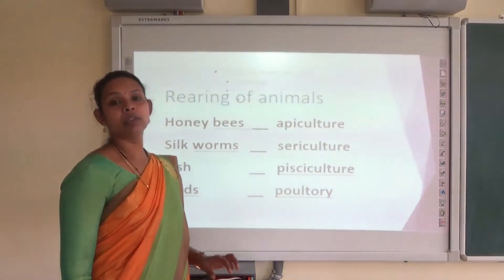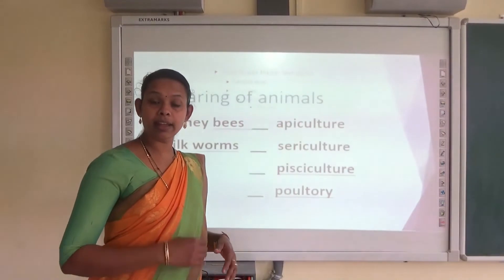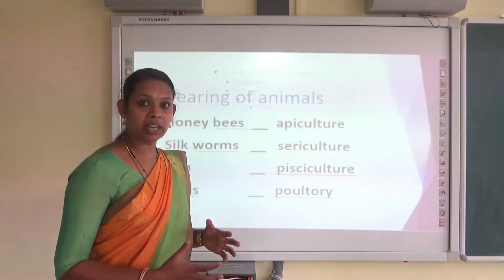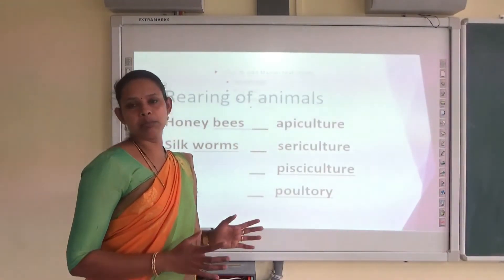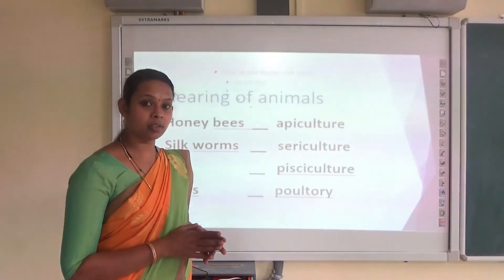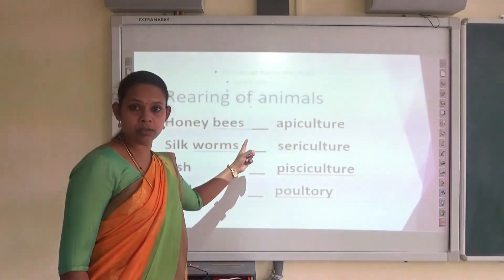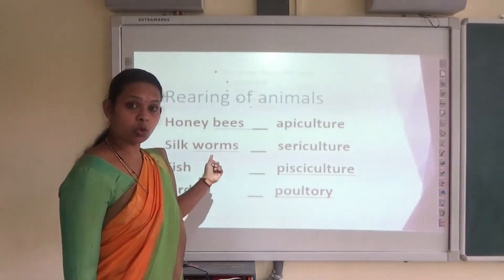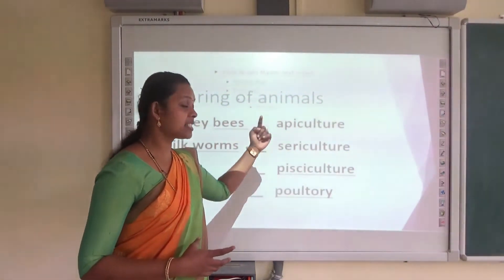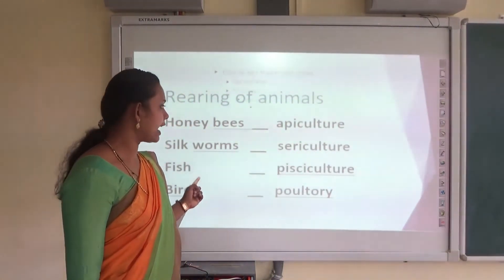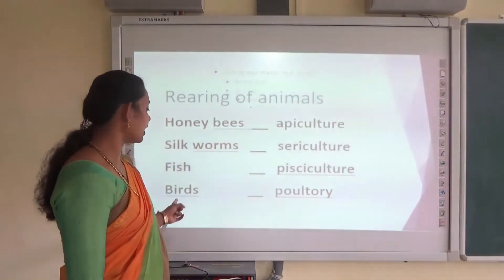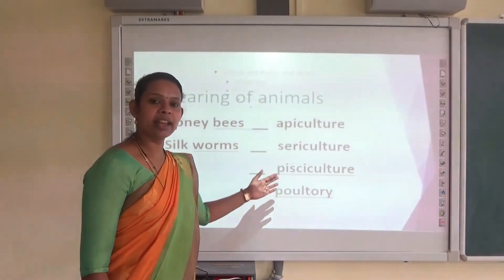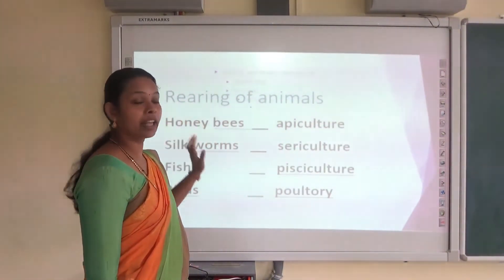Next we will study about rearing of animals. What do you mean by rearing of animals? To get food or for other purposes to yield money, we rear some animals. The rearing of silkworms is known as sericulture, the rearing of fish in a large tank is known as pisciculture, and the rearing of birds is known as poultry. These are the special names given to the rearing of animals.